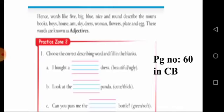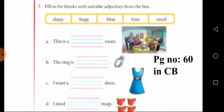Now let's do practice. Choose the correct describing word and fill in the blanks. First: I bought a beautiful dress — the answer is beautiful. Next: look at the cute panda. Next: can you pass me the green bottle?